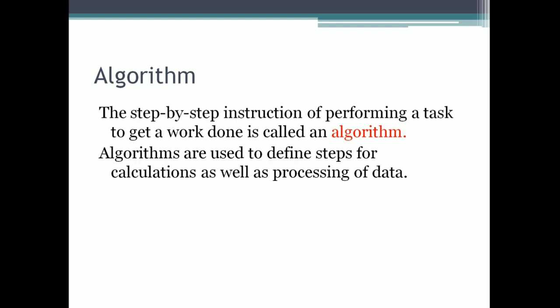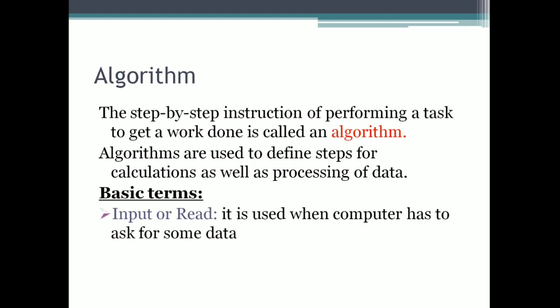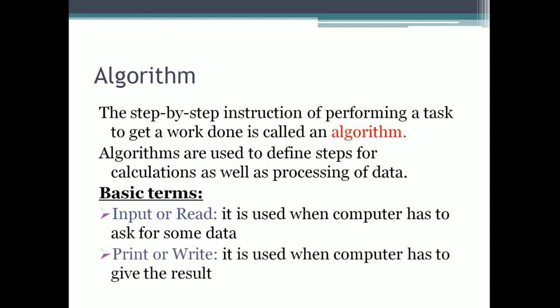Before writing an algorithm we have to learn some basic terms. The first term is input or read. This term is used when the computer has to ask for some data. Comparing with the tea example, the inputs are milk, water, sugar, and tea powder. The second term is print or write. It is used when the computer has to give the result. The result of the process of making tea is the tea itself.